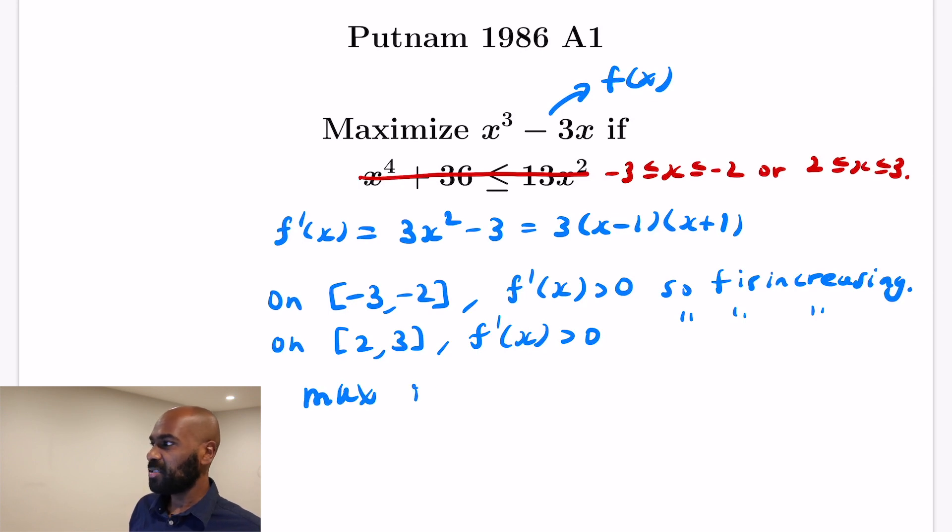Okay, so the maximum then is going to be whatever is largest between f(-2) and f(3). We can check each of those. I think f(-2) is going to work out to -8 plus 6.